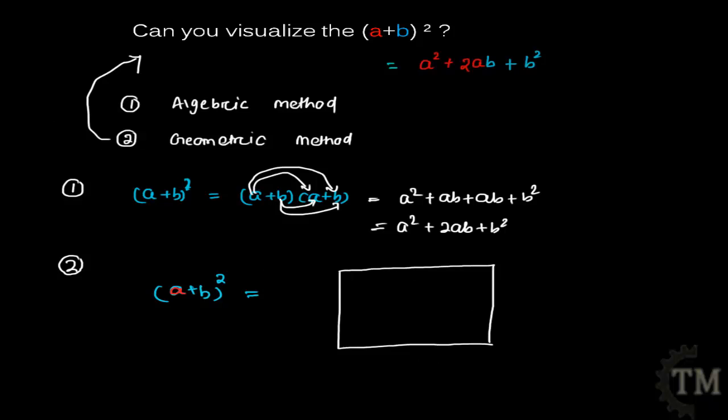It is a square with length a+b. So I will take this part as length a and this part as b. Similarly, since it is a square, all four sides have same length. So I can take this length as a and this length as b. Now I will draw a dotted line.